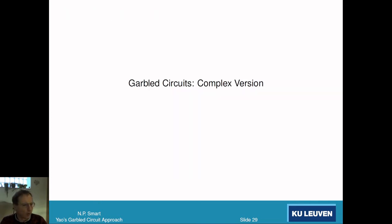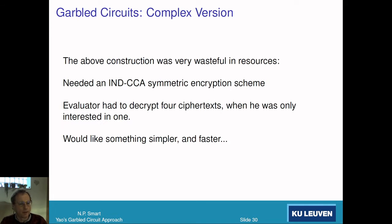But it's not that efficient, so we're going to make it more efficient. It's very wasteful the way we described it last time. We needed an IND-CCA encryption scheme. The evaluator had to decrypt four ciphertexts of which he was only interested in one. He knew beforehand three were going to be nonsense. We want something simpler and faster.